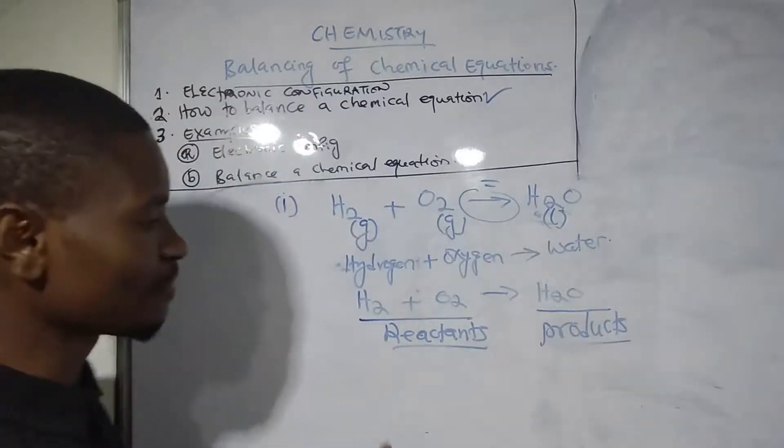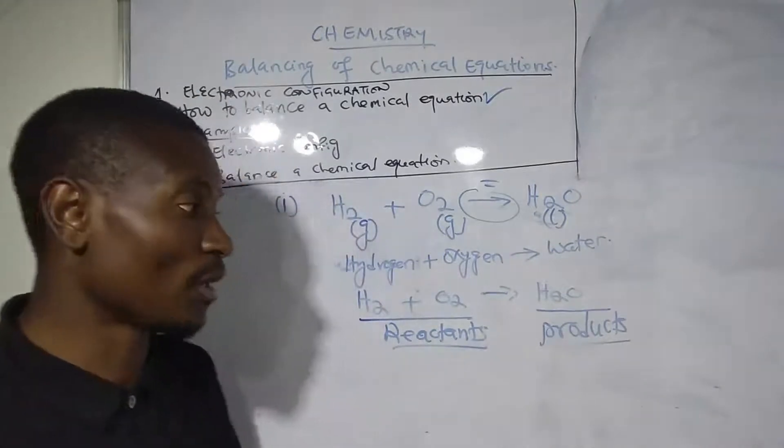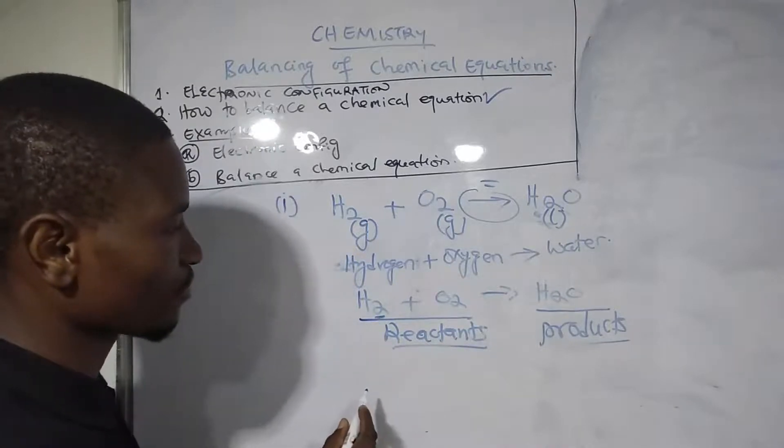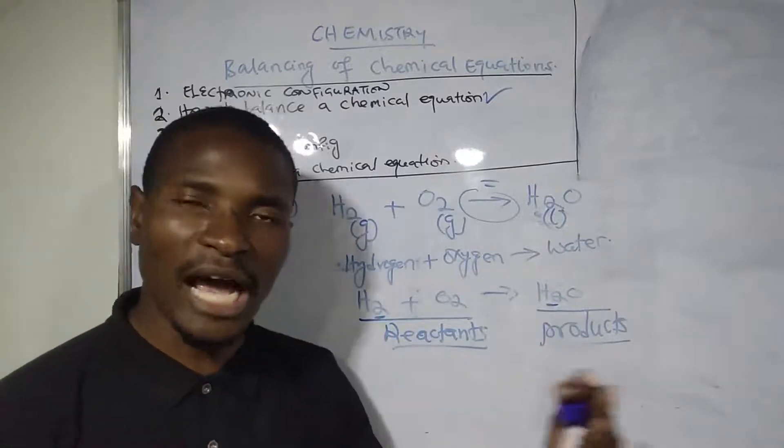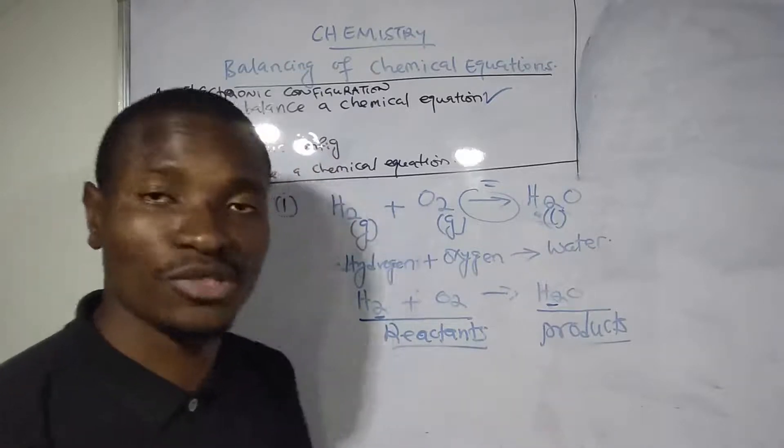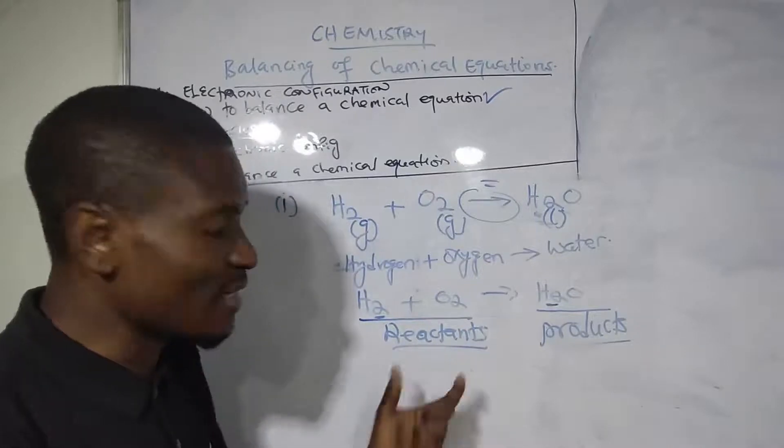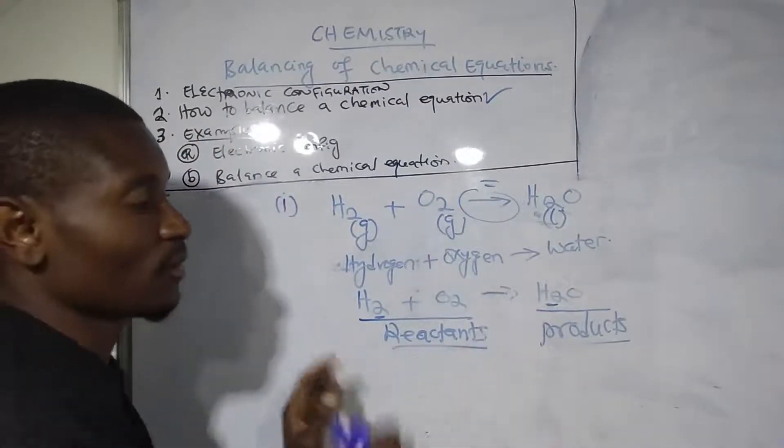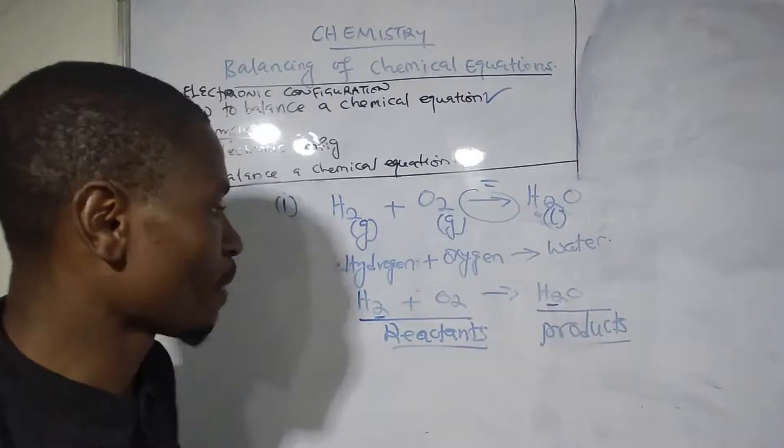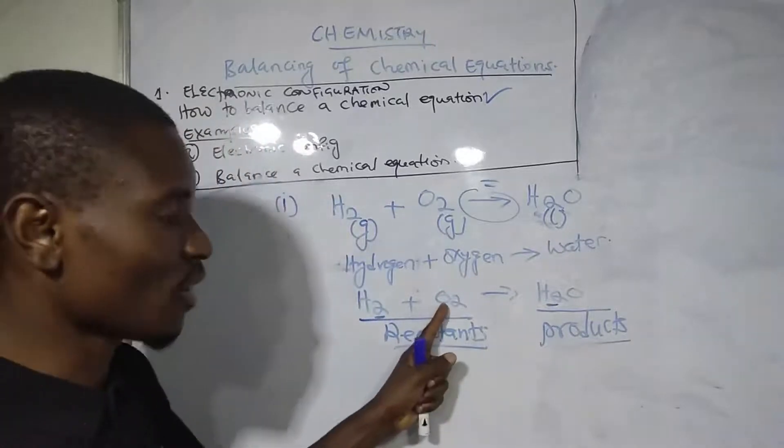The total number of atoms in the reactants must equal the total number of atoms on the product side. We have two hydrogen atoms on both sides, meaning hydrogen is already balanced. We have to ensure that we separately check each atom appearing on the reactant side is the same as the number of atoms on the product side.